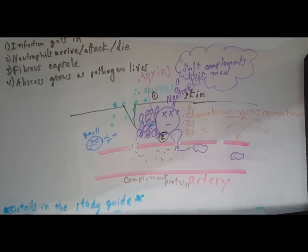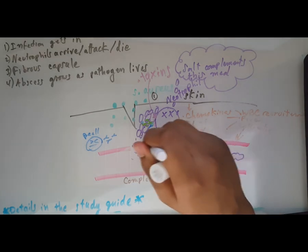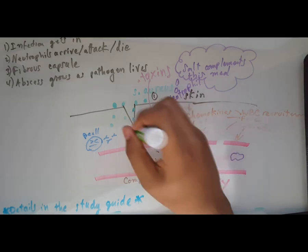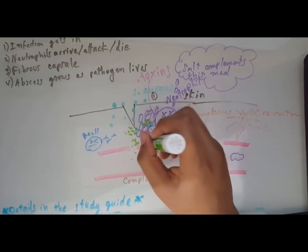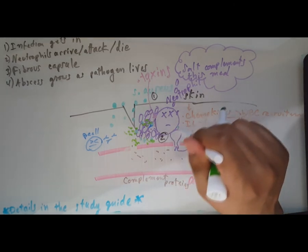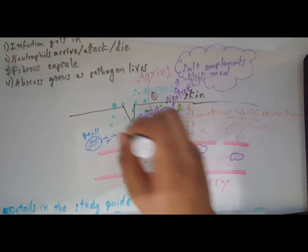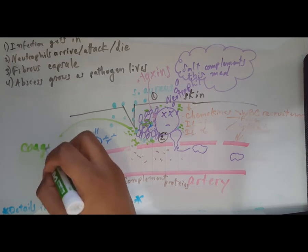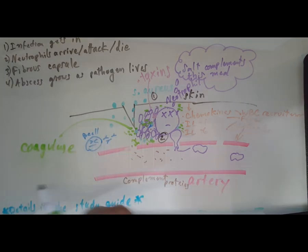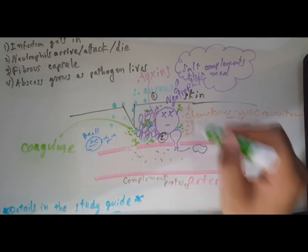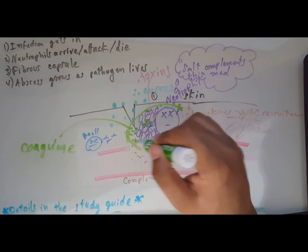Staph aureus also secretes coagulase. Coagulase gets spit out by the staph aureus and it's going to cause fibrin to fibrinogen, and fibrinogen is going to form a clot or ring around this area. We're going to get a fibrous capsule.